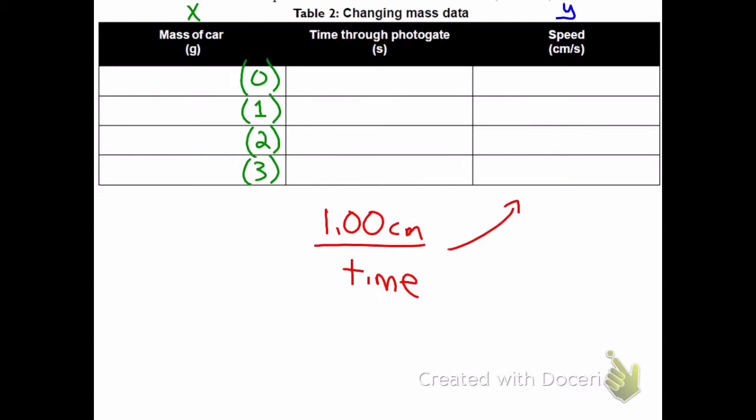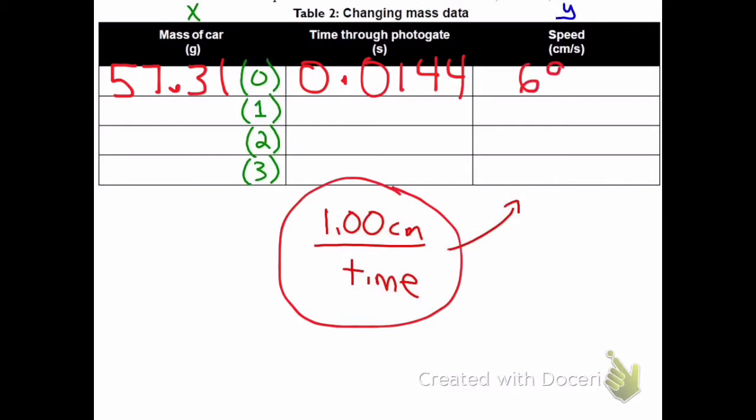So the mass of the car with zero marbles in it was 57.31 grams. The time through the photogate with zero marbles was 0.0144. And then again, you're going to do one centimeter divided by that time, which will give you 69.4, three significant figures.